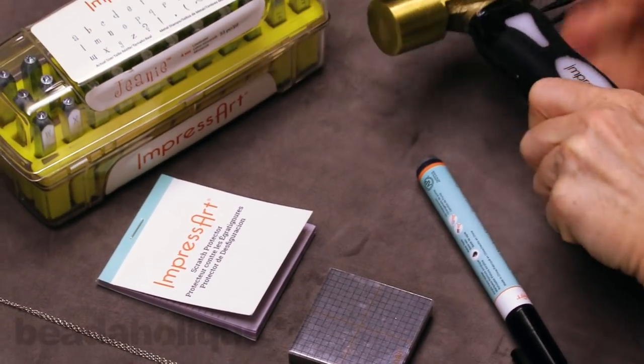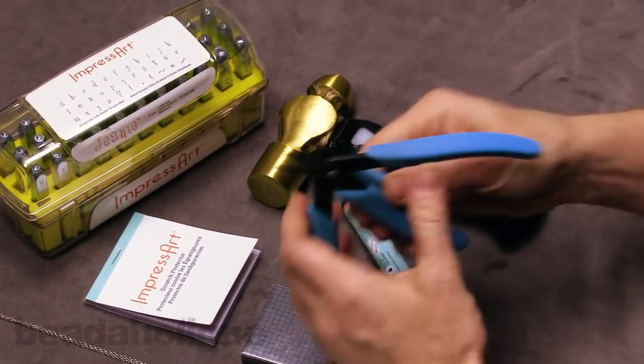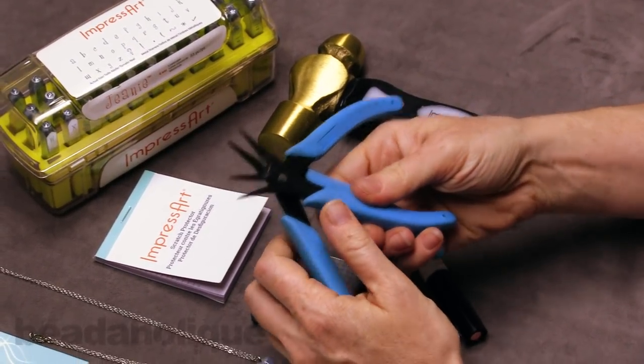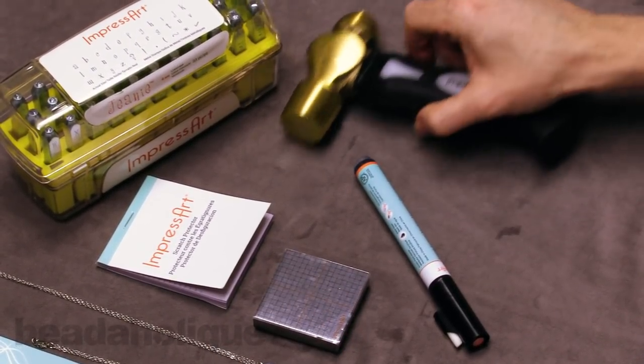And then I'm going to need a brass hammer and then just a couple pairs of chain nose pliers to open and close that jump ring. All right, let's begin.